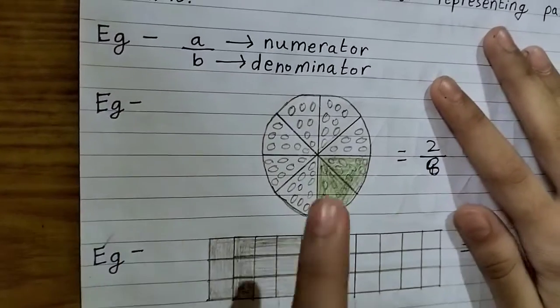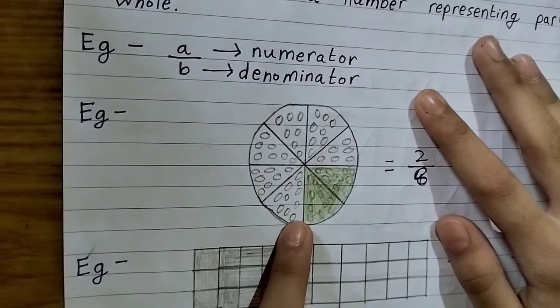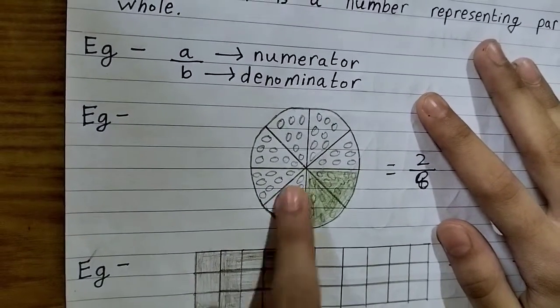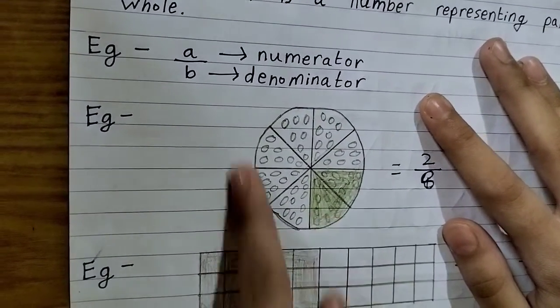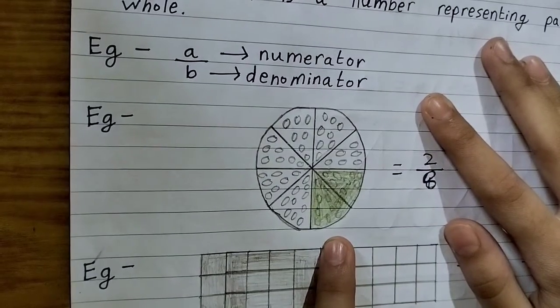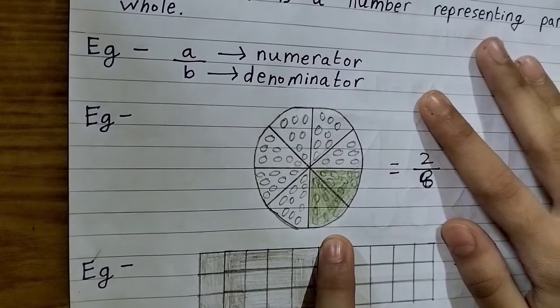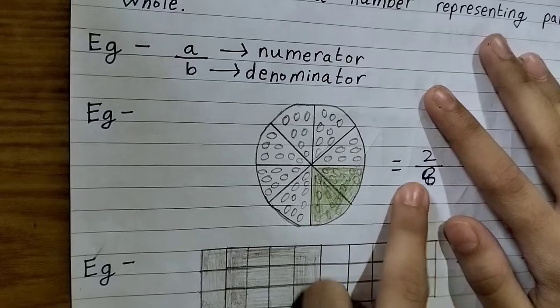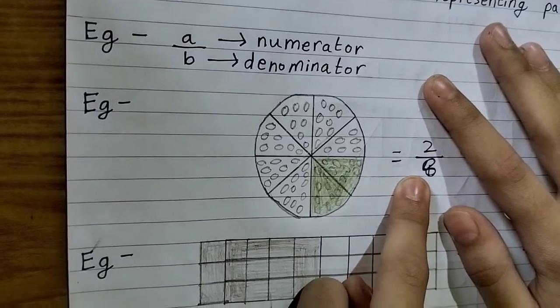Example number 2. Here we have a delicious pizza and I have shared the two parts of it and this pizza has total 8 slices. What will be the fraction? Yes, it will be 2 by 8.